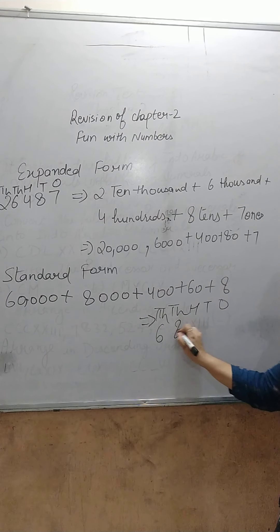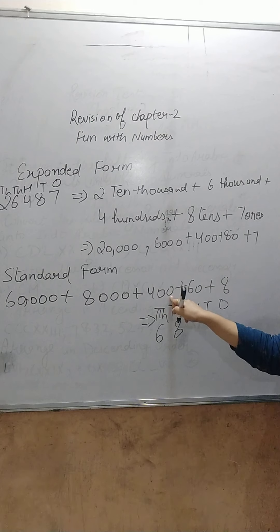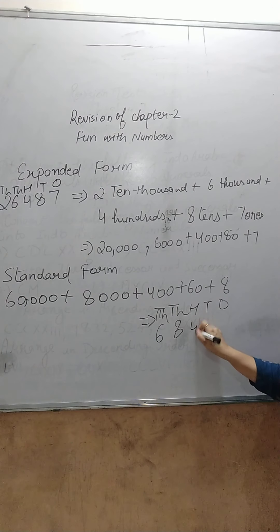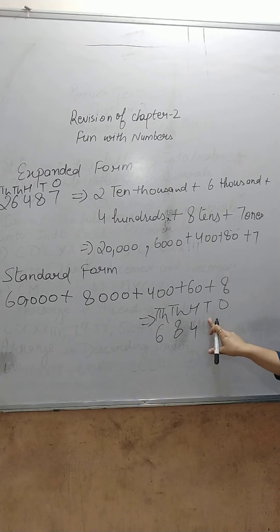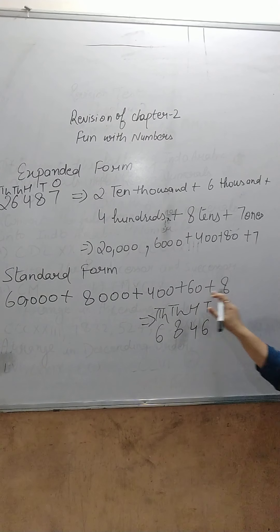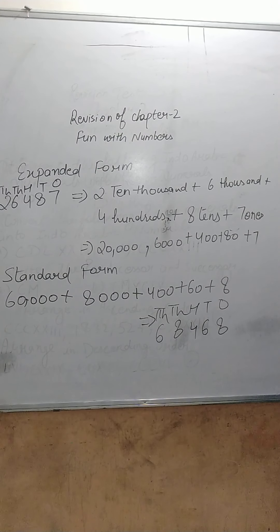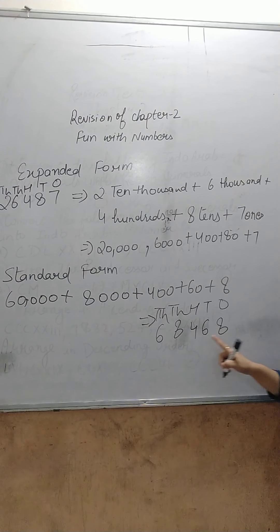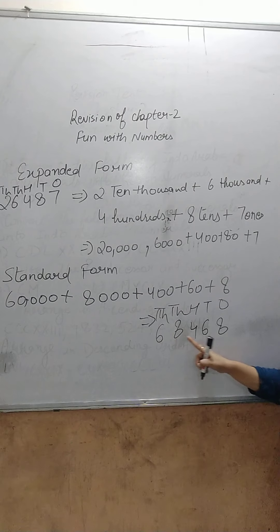Write 8 here. Then 400 is on the 100's place, write 4 here. 60 is on the 10's place, write 6 here. And 8 is on the 1's place, write 8 here. So the number becomes 68,468.